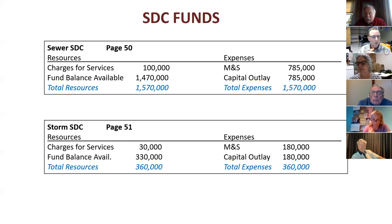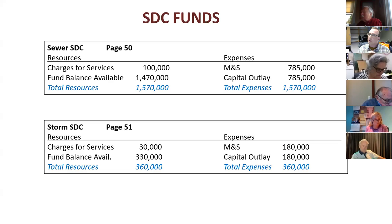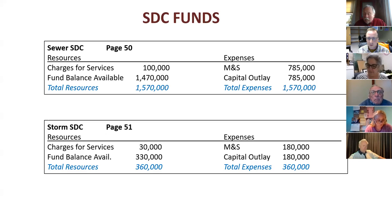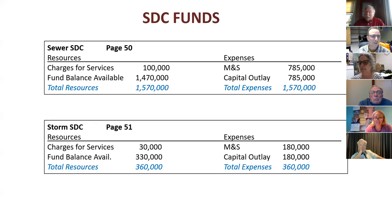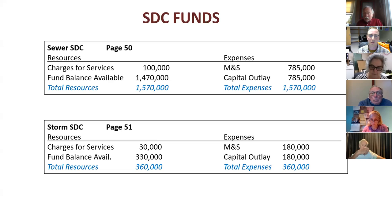Moving to the Sewer System Development Charges on the next page, page 50. Same idea here — we appropriate all funds to be used. I don't anticipate Sue being able to spend $1.5 million in sewer SDCs. On page 51 are the Storm SDCs — same philosophy, we appropriate to spend everything although we don't anticipate fully expending all those funds.